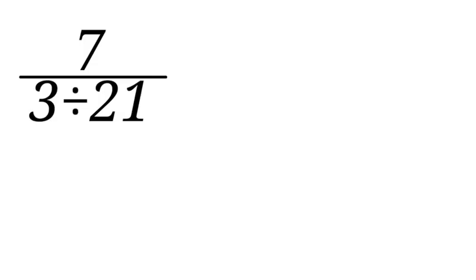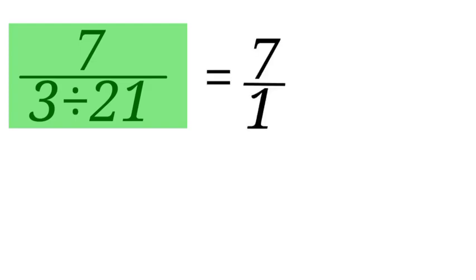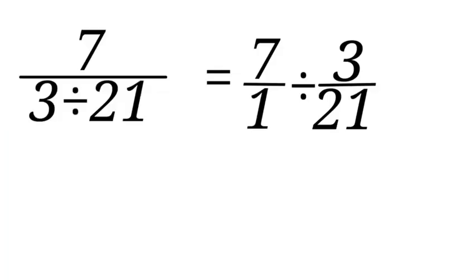And then we can also rewrite this expression as 7 over 1 divided by 3 over 21. Nothing changed there. 7 over 1 is the same as 7.